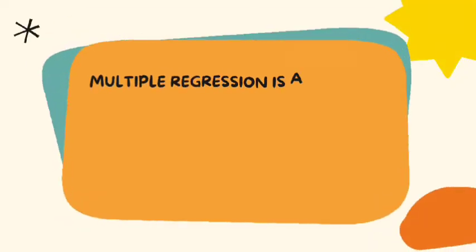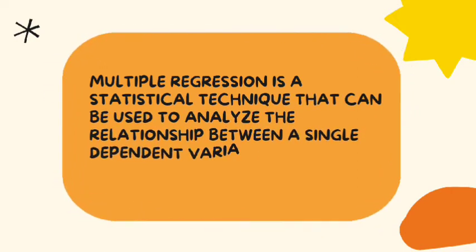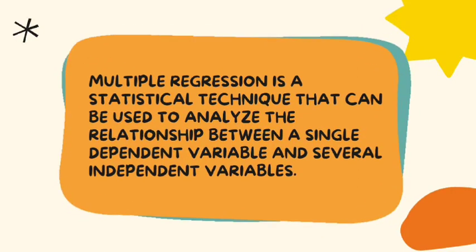Now what's the purpose of multiple regression? Multiple regression is a statistical technique that can be used to analyze the relationship between a single dependent variable and several independent variables. The objective of multiple regression analysis is to use the independent variables whose values are known to predict the value of a single dependent value.